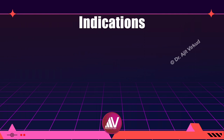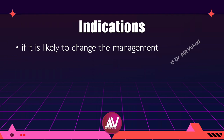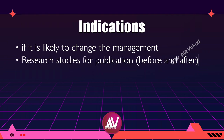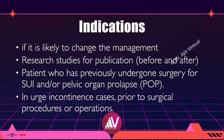What are the indications for performing this test? Urodynamic studies should be done if it is likely to change the management, or when clinical studies are done for publication purposes. One clear-cut area where UDS is very helpful is for a patient who has previously undergone surgery for stress urinary incontinence which has failed and/or for pelvic organ prolapse repair. Another indication is urge incontinence cases prior to surgical procedures. It is not required before conservative or medical treatment of urinary incontinence.